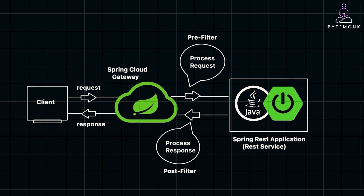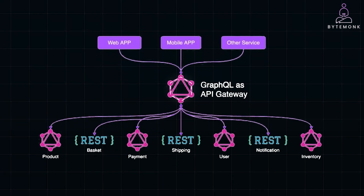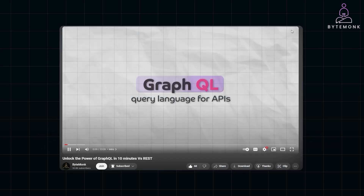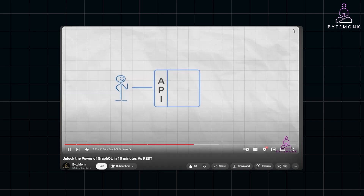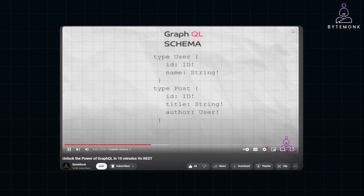One modern approach to building an API gateway is using GraphQL. GraphQL allows clients to query your API in a flexible way, asking for exactly the data they need and nothing more — reducing over-fetching and under-fetching issues common with REST APIs. In a microservices architecture, you can implement a GraphQL API that communicates with multiple backend services. The gateway translates GraphQL queries into requests to the appropriate services, aggregates the results, and sends them back to the client. This approach is particularly powerful when dealing with complex data models and client-specific needs. GraphQL's strong type system also helps catch errors early in the development process, improving the reliability of your API.